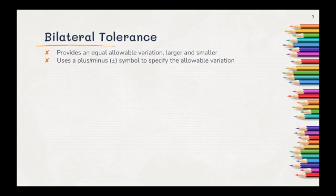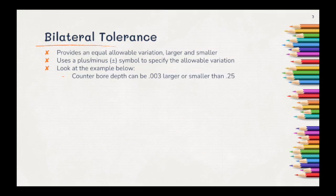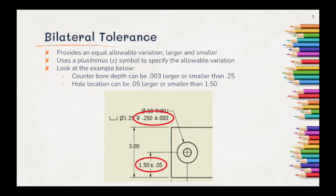Now let's look at bilateral tolerances. Bilateral tolerances provide an equal allowable variation, larger and smaller. They use a plus-minus symbol to specify the allowable variation. A measurement can be plus a certain amount or minus a certain amount. Let's take a look at the example below. The counterbore depth can be 0.003 larger or smaller than 0.25. The hole location can be 0.05 larger or smaller than 1.5.